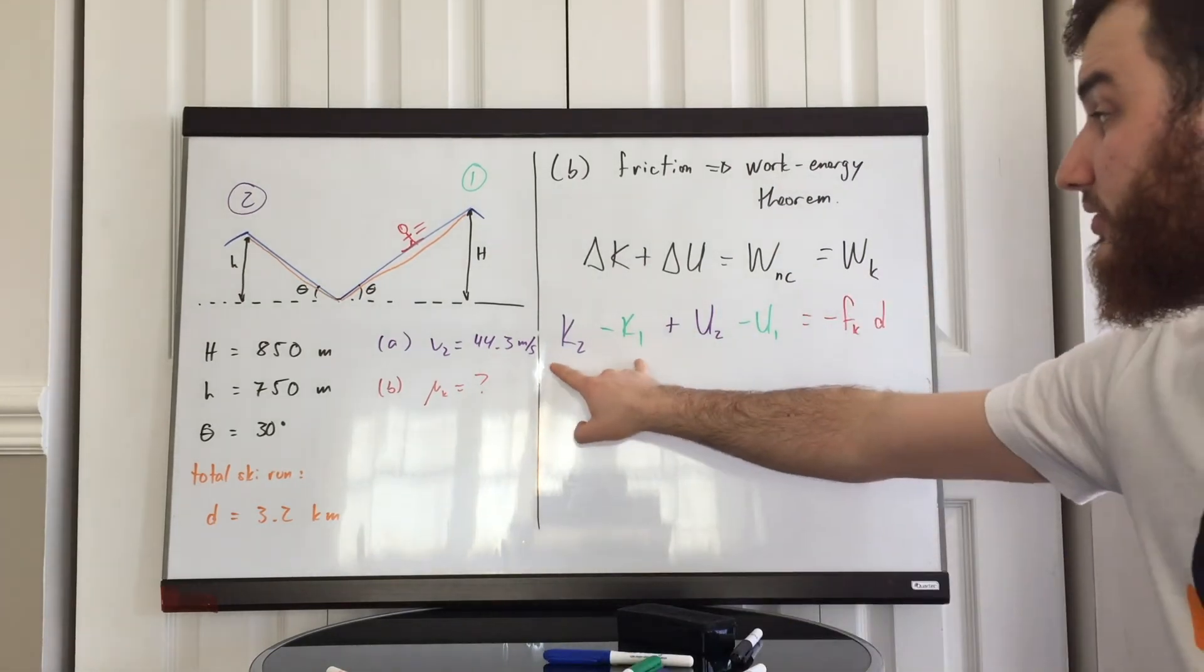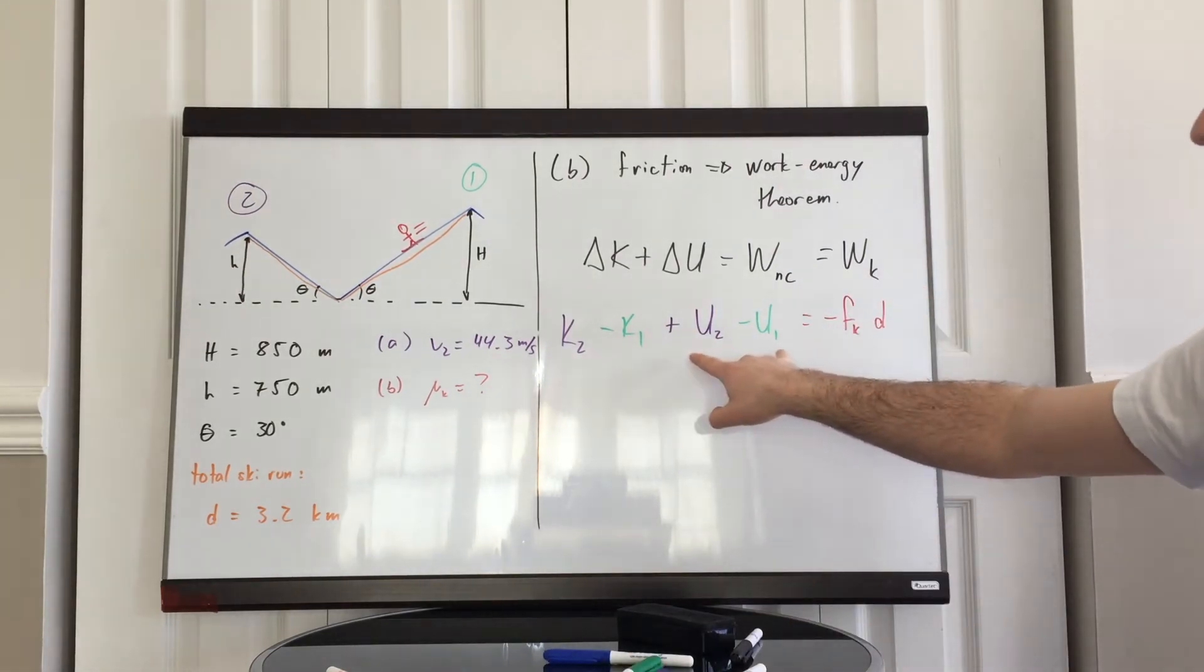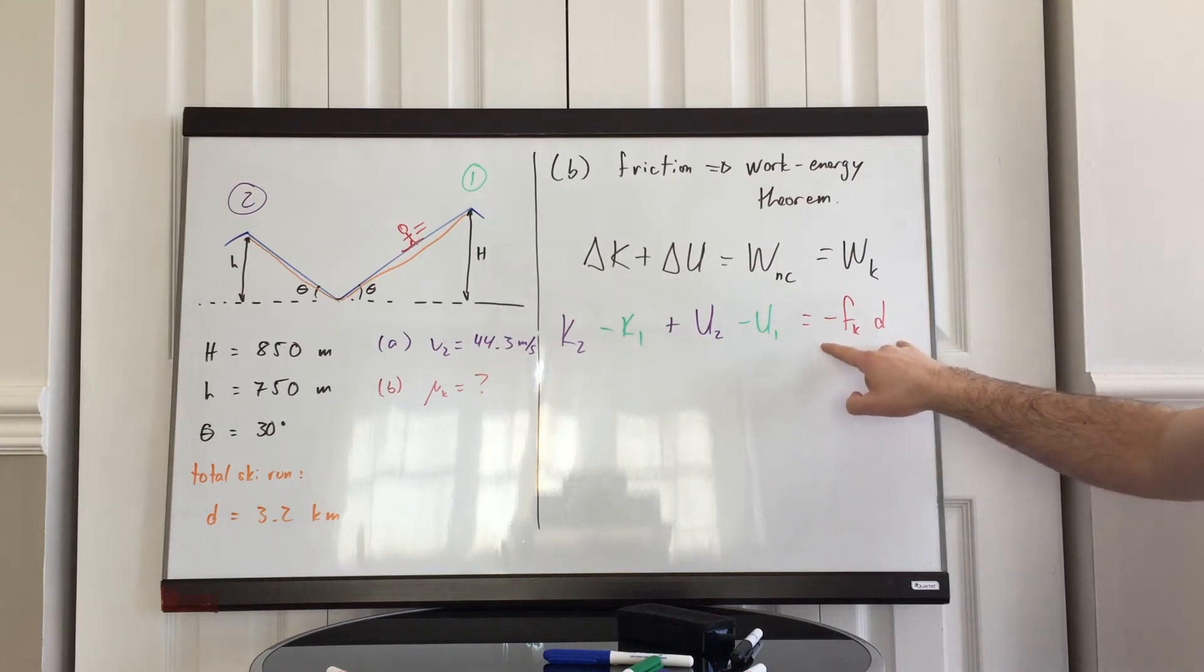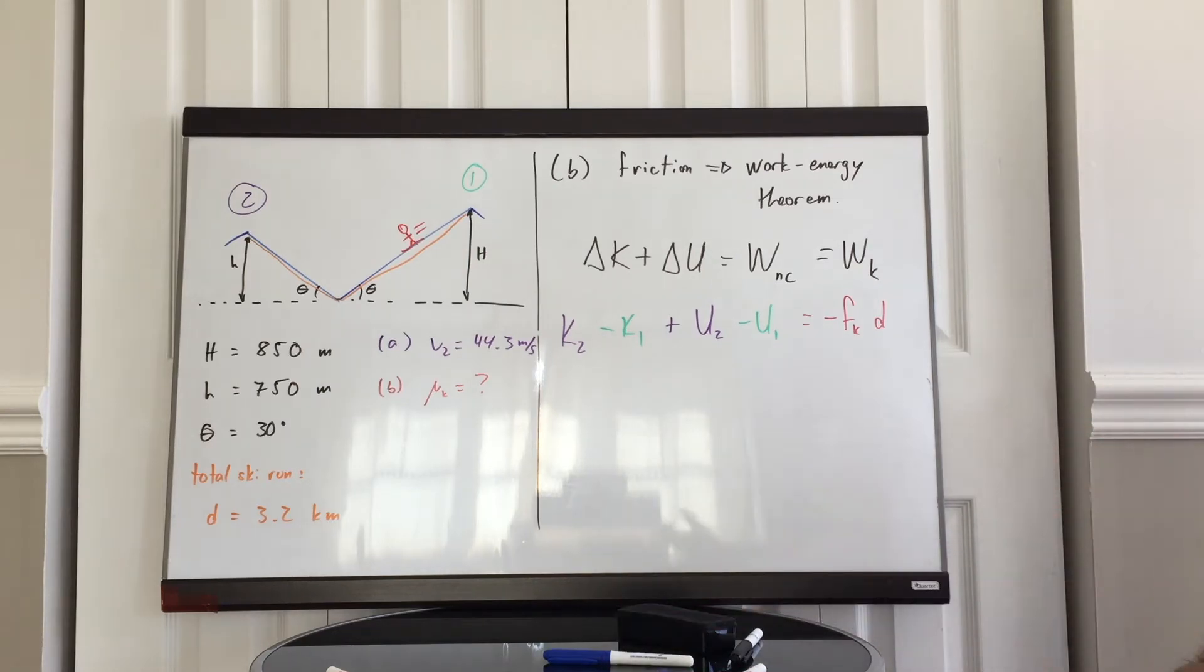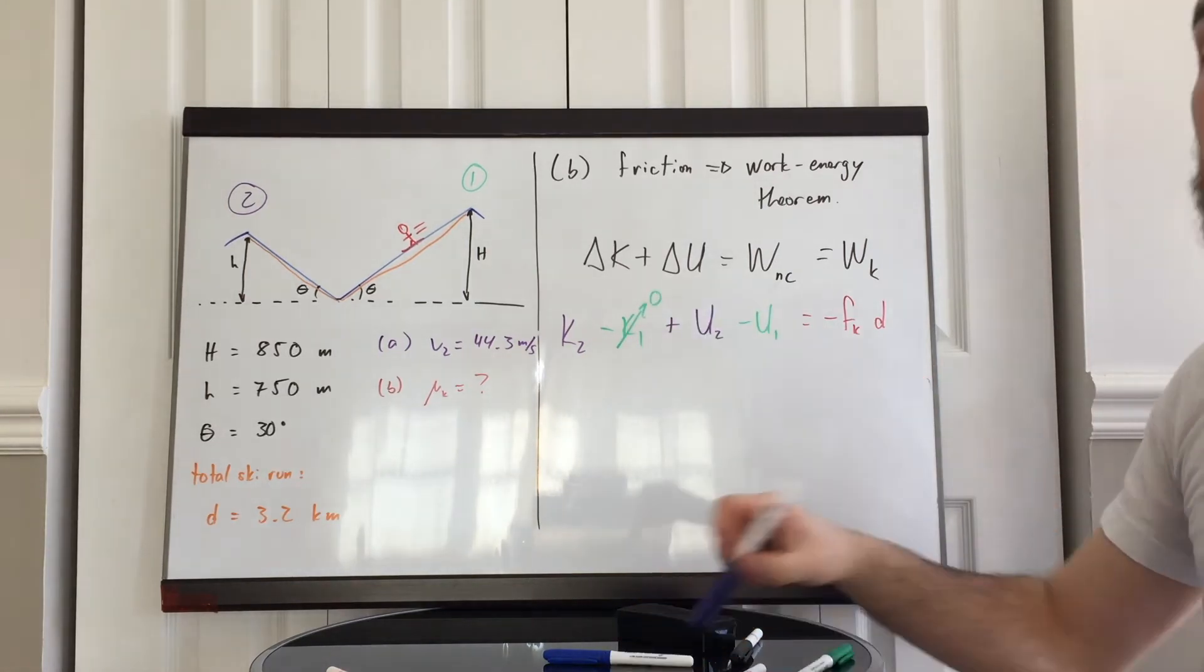So this is what it is. The change in kinetic energy plus the change in gravitational potential energy is equal to the work done by the kinetic friction force. By definition, the work done by the kinetic friction force is negative frictional force itself times the total distance over which the friction force acts. As before, we start with zero speed. The skier starts at rest.